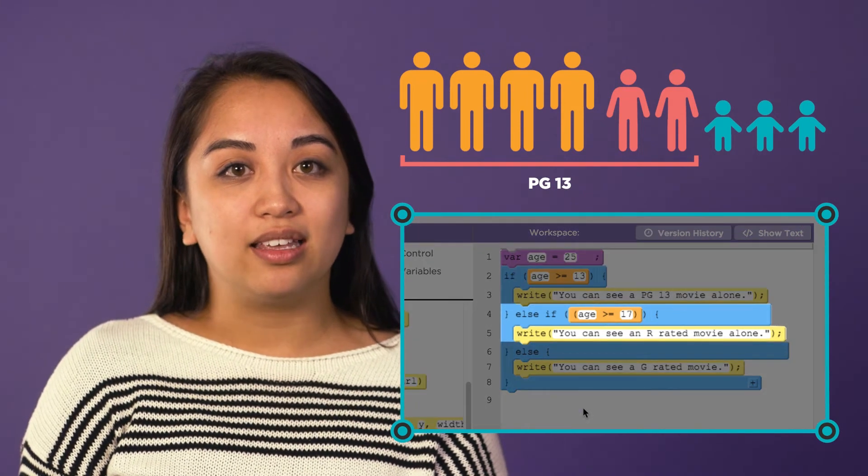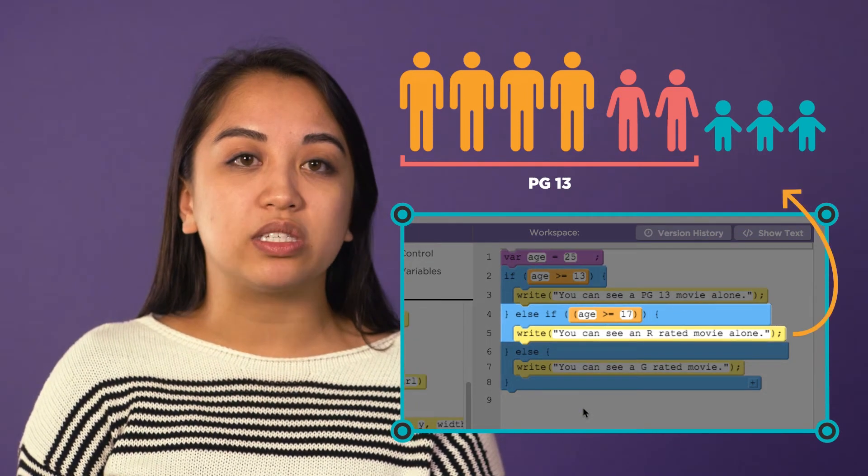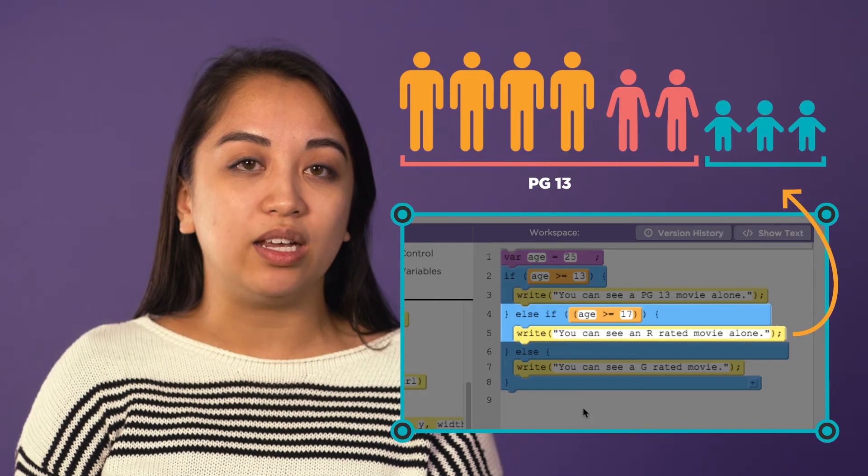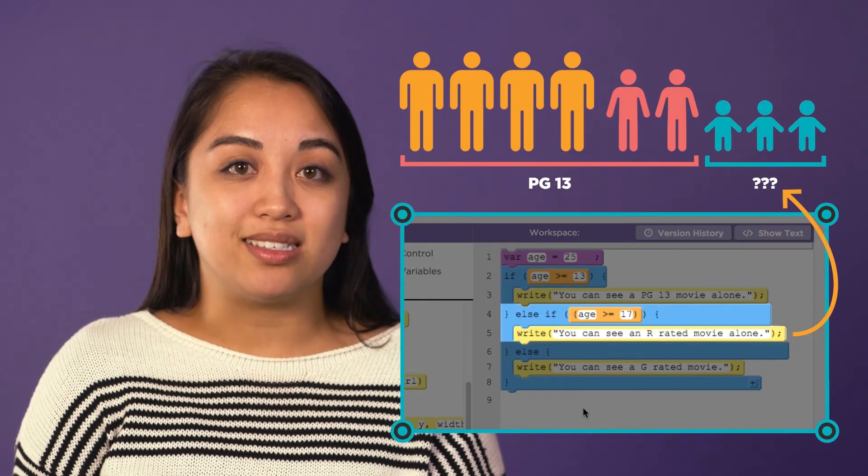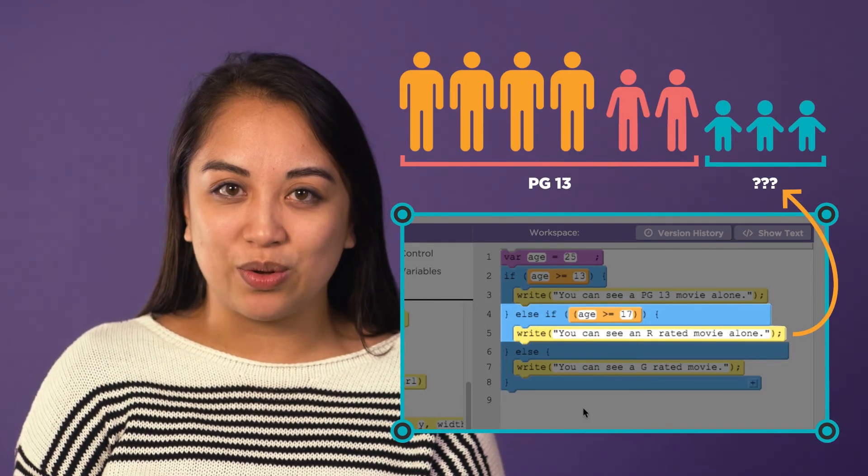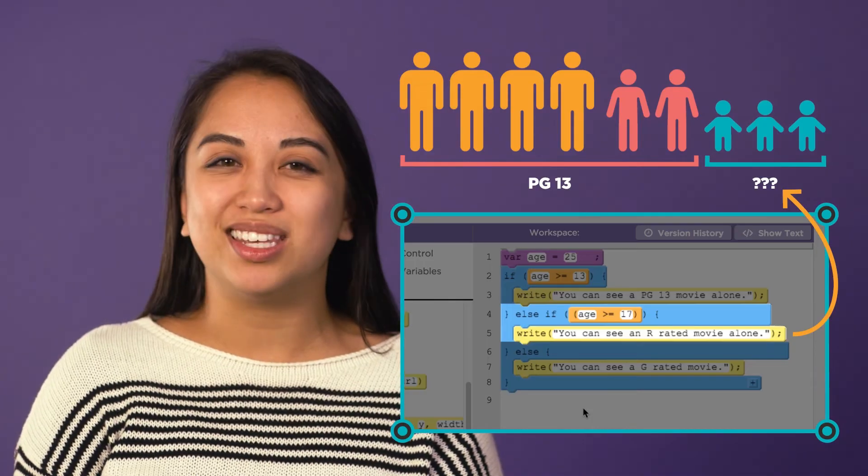And with the next else if line, the computer would be looking for people 17 or older in the remaining group. This code misses the adults because they were true in that first condition. This won't work.